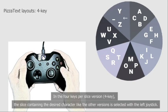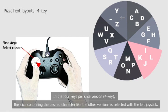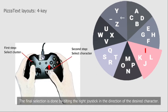In the four-key version, the slice containing the desired character, like the other versions, is selected with the left joystick. The final selection is done by tilting the right joystick in the direction of the desired character.